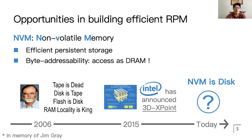NVM is a storage class memory which has high performance and byte addressability. This means that it can be accessed like DRAM. Recently, Intel has finally released the first production NVM, 3D XPoint. So nowadays, we are able to use NVM as an efficient, persistent storage.